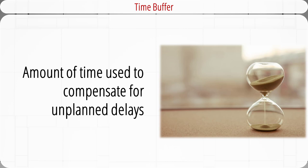Contingency funds are established to absorb unplanned costs. Similarly, time buffers are used to cushion against potential delays in the project schedule. The more uncertain the project, the more time should be reserved. Time buffers are added to activities with severe risks — they could be added to merge activities prone to delays, to non-critical activities to reduce the likelihood that they will create another critical path, or to activities that require scarce resources to ensure those resources will be available when needed.